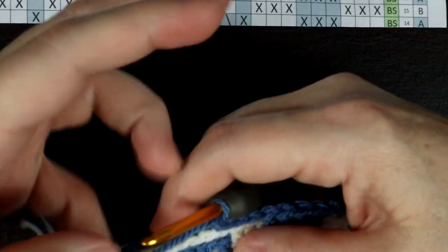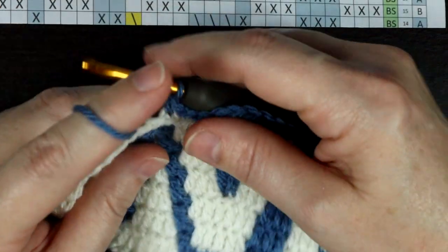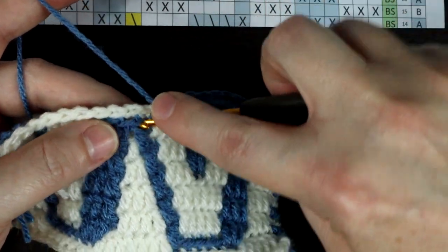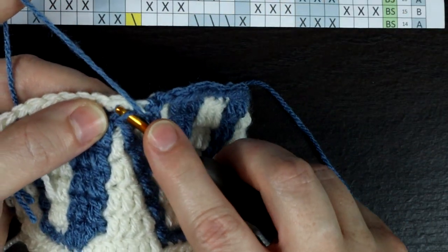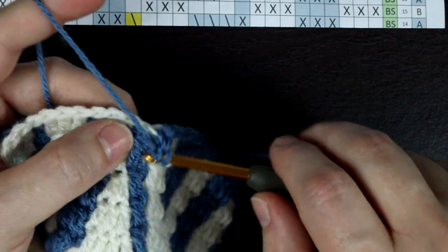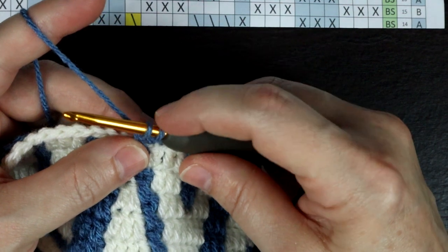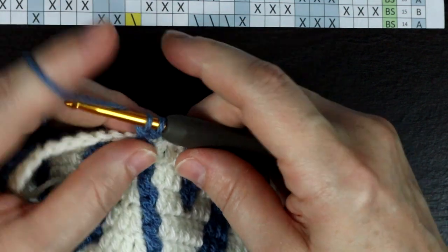Here's how to work it. Yarn over and count over one to the right to work into your first loop. Yarn over and pull through. Yarn over and pull through two. This leaves two loops on the hook.